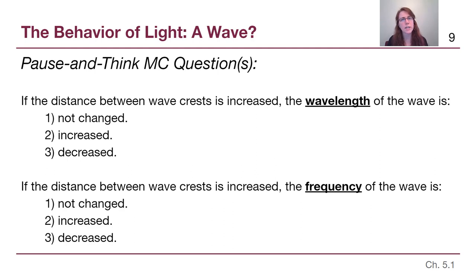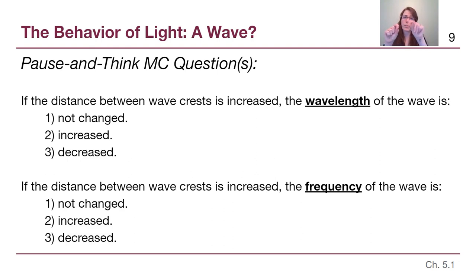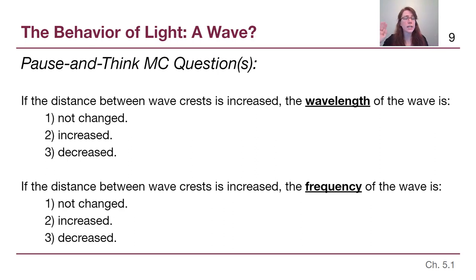A couple of questions to check our understanding of these key terms. If the distance between wave crests is increased, then the wavelength is by definition also increased — the top answer is two. However, if the distance between wave crests is increased, the frequency is going to get smaller. If the wave is all spread out and stretched, fewer total waves will pass through every single second, and the frequency will decrease. So the bottom answer is three — two on top and three on the bottom.